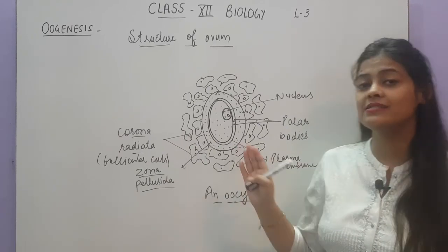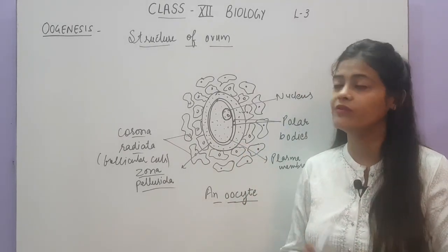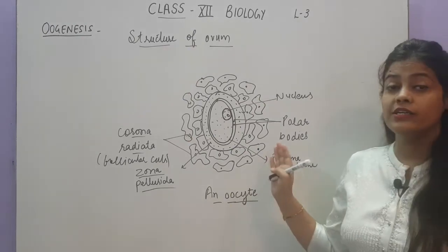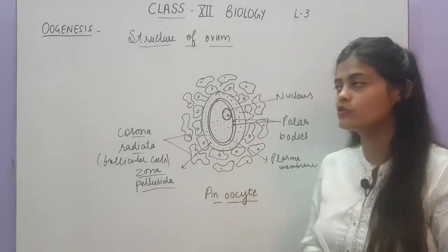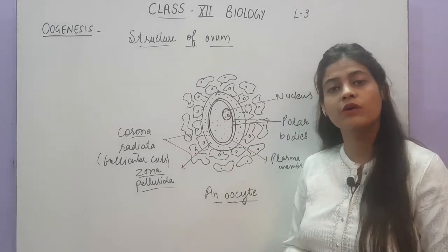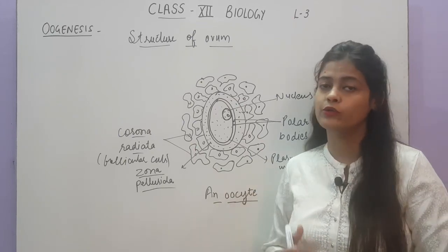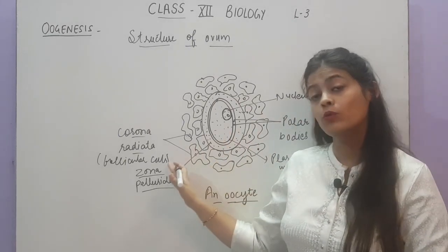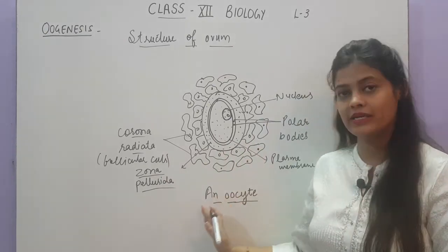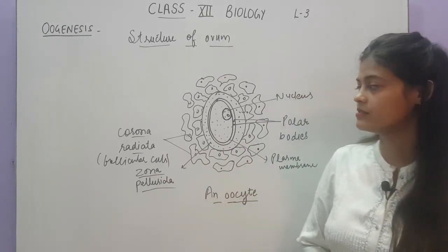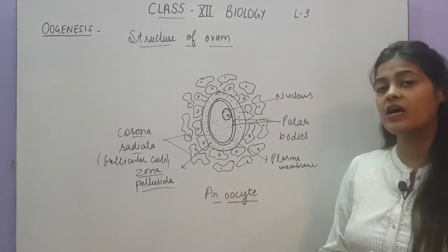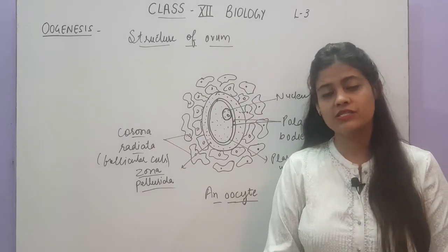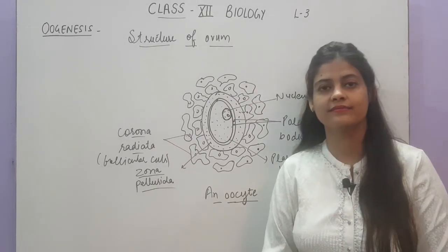The zona pellucida will remain outside the secondary oocyte until fertilization. When the sperm reaches the ovum, it must break through the zona pellucida — recall that the acrosome at the tip of the sperm head contains hydrolytic enzymes used to degrade the zona pellucida so the sperm nucleus can enter the secondary oocyte. The structure remains in the secondary oocyte stage until the sperm arrives. With this, we have finished oogenesis, and next we will take up the menstrual cycle in detail.